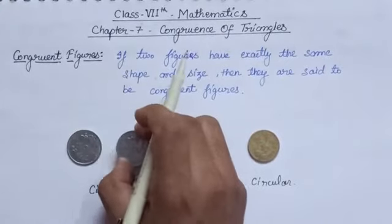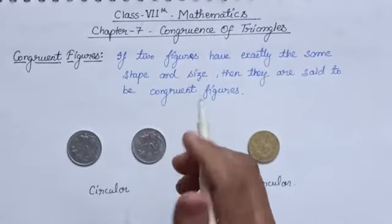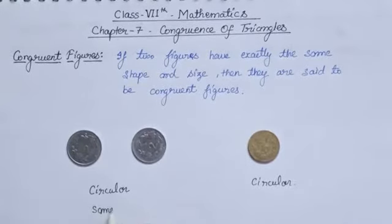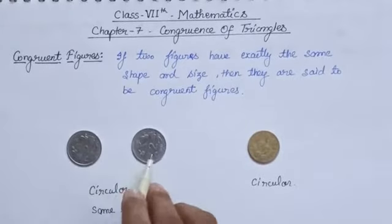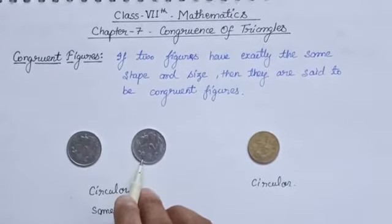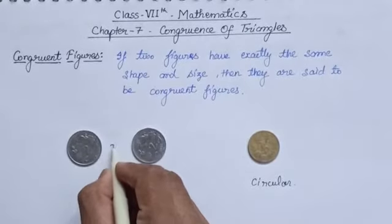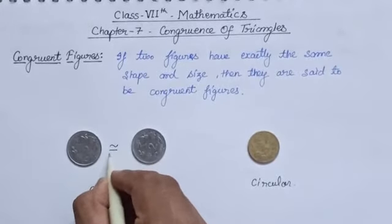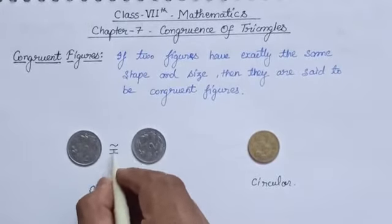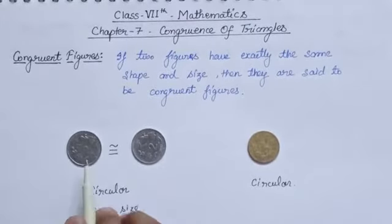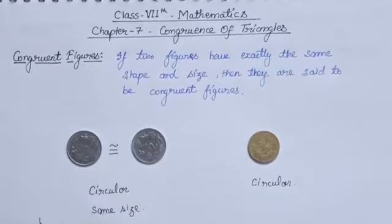You can see that these two coins have the same size. The shape is circular and also they have the same size. Hence, we can say these two 2-rupee coins are congruent. The sign of congruency is this symbol. We can represent these two 2-rupee coins by this sign because these are congruent to each other.